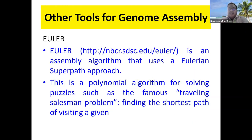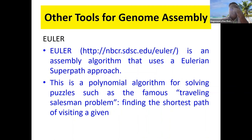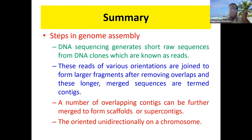Another tool is Euler, which uses the traveling salesman problem or dynamic programming — learned previously in computational biology — to identify the shortest path. That means it identifies which sequences have the most overlap with each other, then merges them. Euler is also used for whole genome assembly.